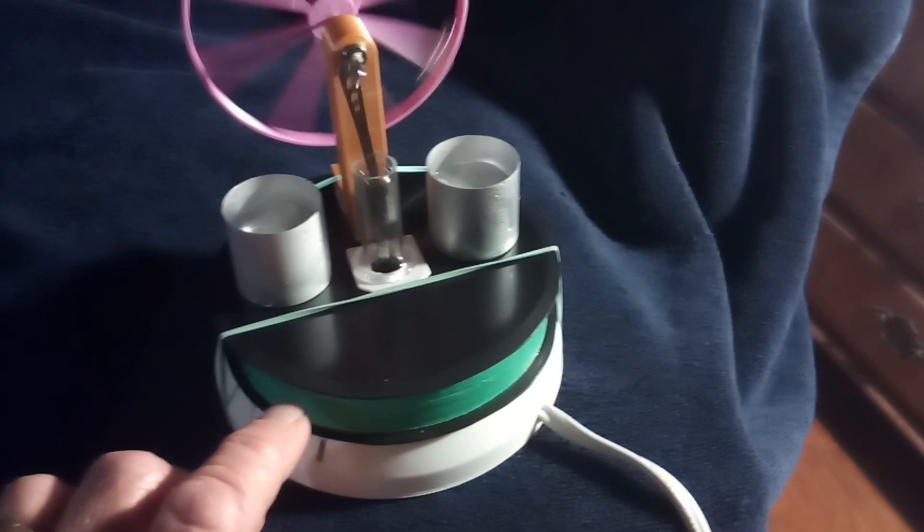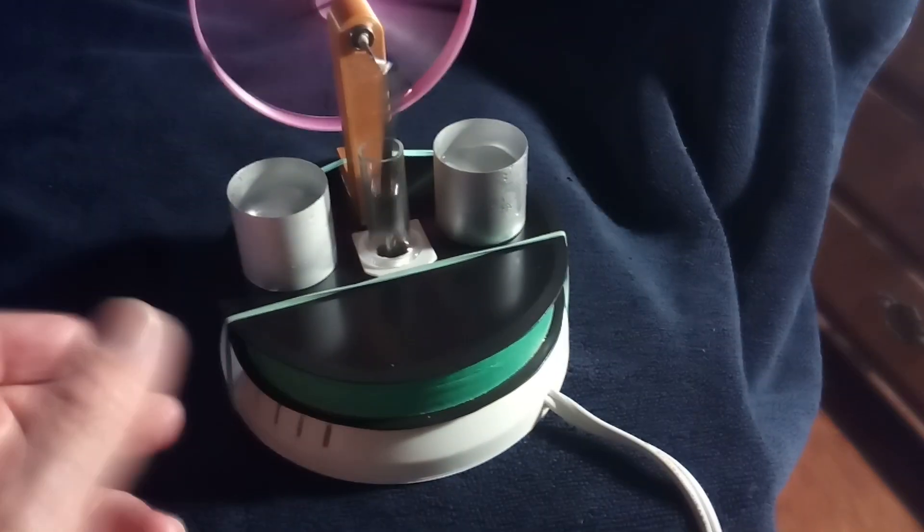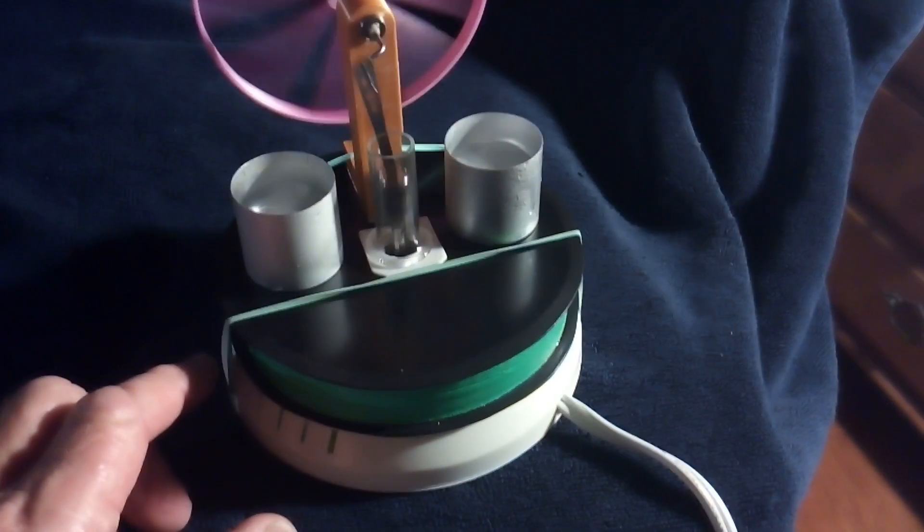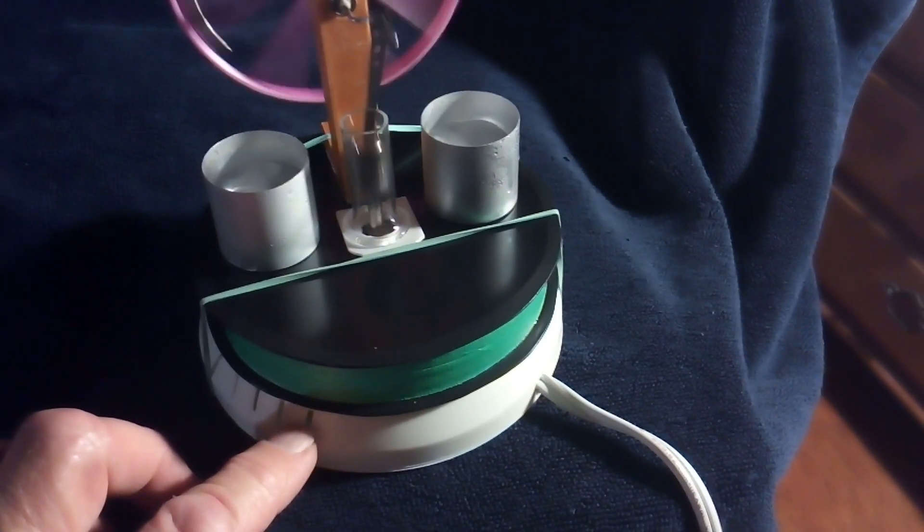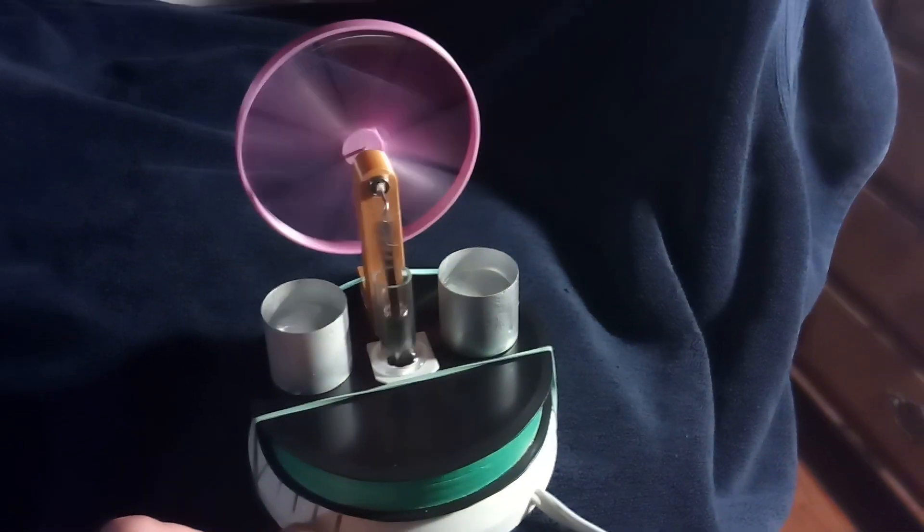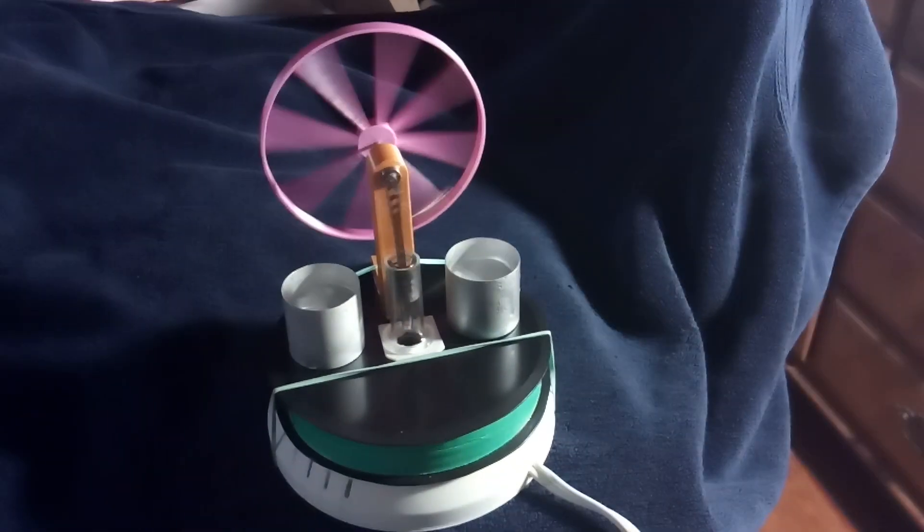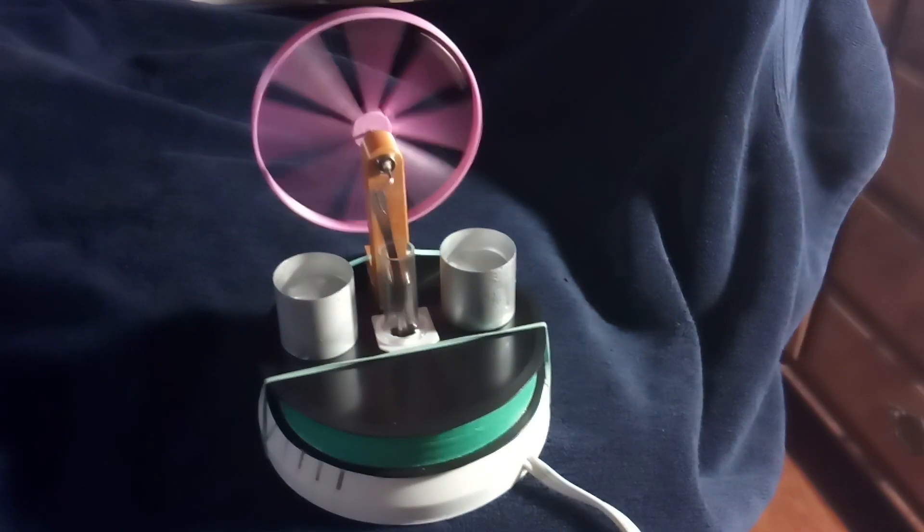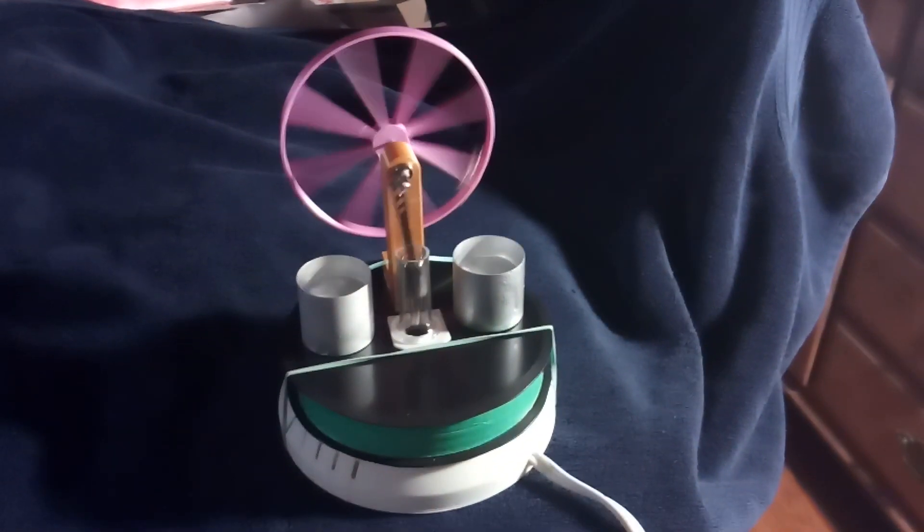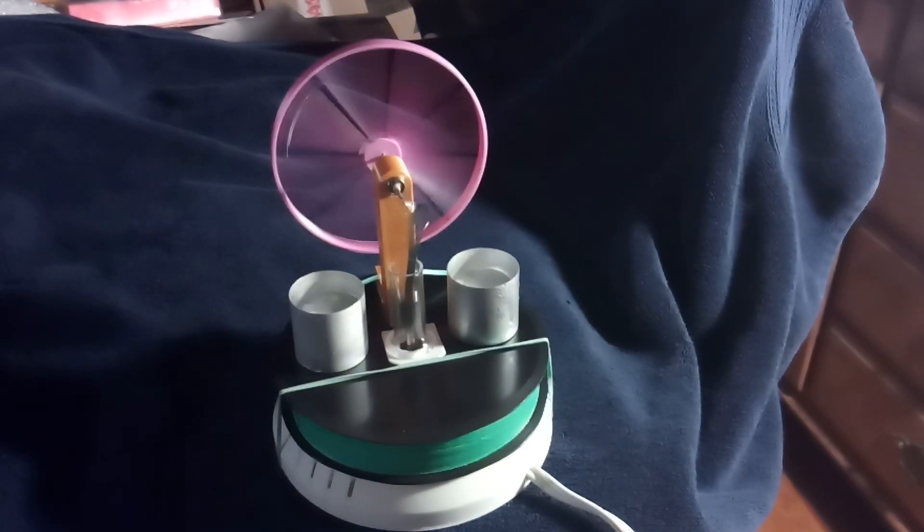I might put some screws or clamps or something to hold this together better. The rubber bands just hold this tight to the base here. It's like a little hot plate is what it is, but that runs pretty good. I'm pretty pleased with how that turned out. It's a magnetic ring bomb sterling engine.